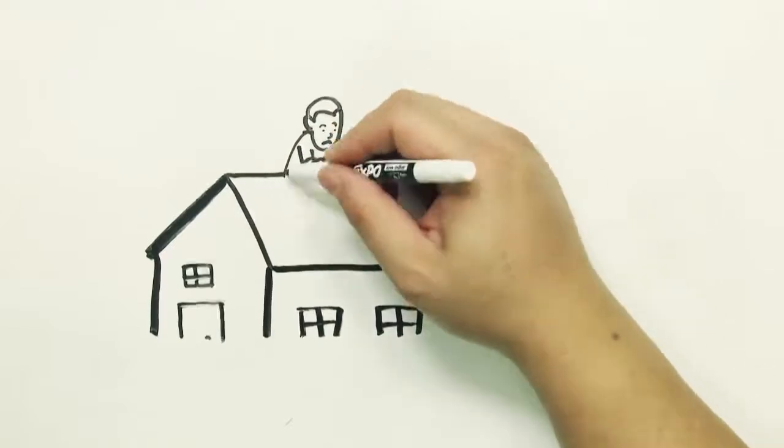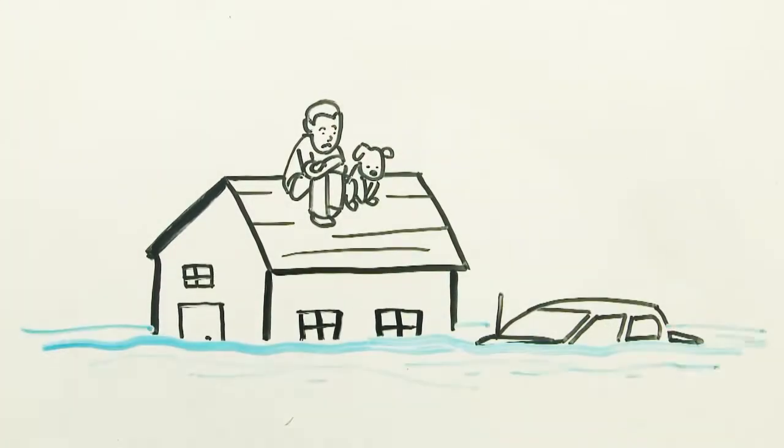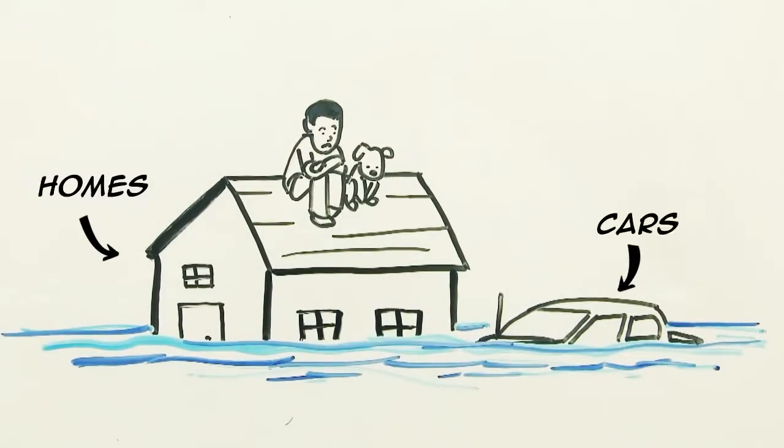Once water starts to rise, the destructive rush can quickly cover a lot of ground: homes, cars, people, pets.